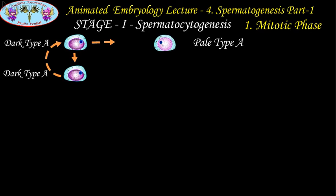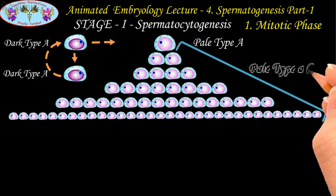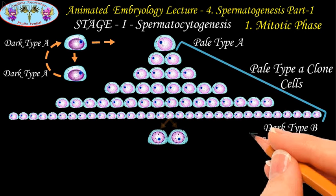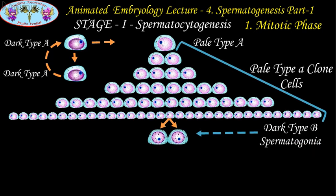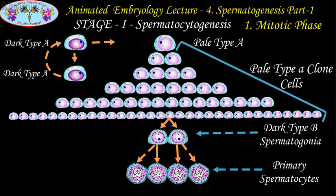The pale type A spermatogonial cells undergo around 5 consecutive mitotic divisions and produce more pale type A spermatogonial cells. At the 6th mitotic division, each pale type A spermatogonia gives rise to 2 dark type B spermatogonia, and these dark type B spermatogonia undergo one more mitotic division to form 2 primary spermatocytes. All the cells produced in this phase are diploid, as they are undergoing only mitotic division, and the primary spermatocyte produced at the end enlarges in size and prepares itself for meiotic division.